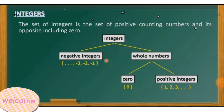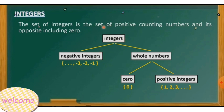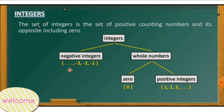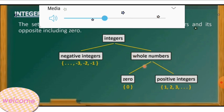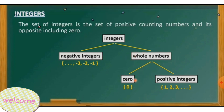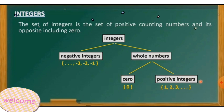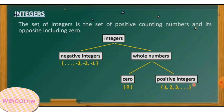Let's talk about integers first. Integers are composed of the negative integers — that is, the negative numbers, where you can see the negative sign before the number — and also the whole numbers. The whole numbers are composed of zero and the counting numbers, or the positive numbers: 1, 2, 3, and all positive integers.